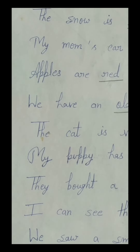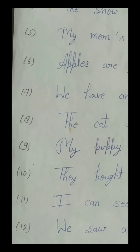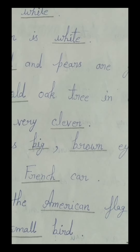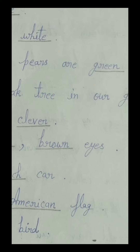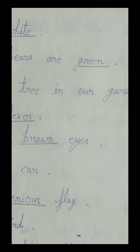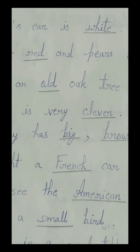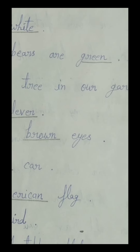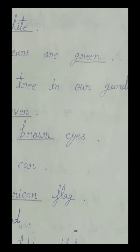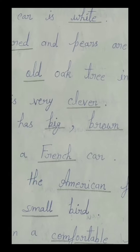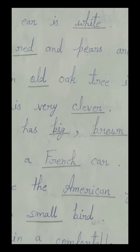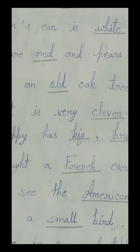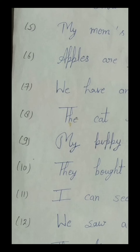The sixth number sentence is: 'Apples are red and pears are green.' It means 'seb lal hain aur nashpaati hari hai.' In this sixth number sentence, 'red' and 'green' are both our adjectives. 'Red' is describing the color of apples, and 'green' is describing the color of pears. Apples and pears are both our nouns. So all students, underline the words 'red' and 'green' in this sixth number sentence.